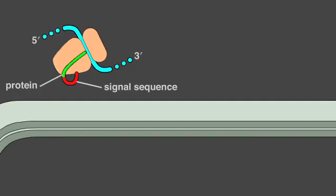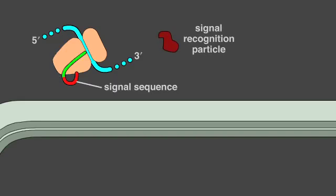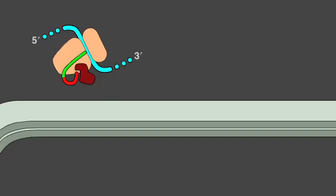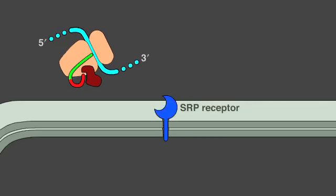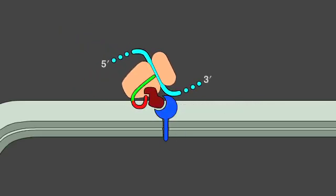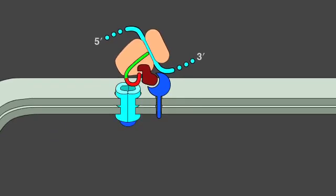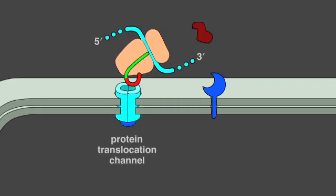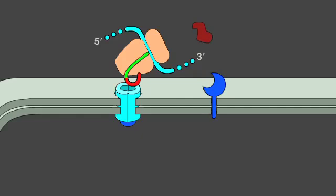The signal sequence is guided to the ER membrane by a signal recognition particle, or SRP, which binds the ER signal sequence in the new protein as it emerges from the ribosome. Protein synthesis then slows down until the SRP-ribosome complex binds to an SRP receptor in the ER membrane. The SRP is then released, passing the ribosome to a protein translocation channel in the ER membrane. Thus, the SRP and SRP receptor function as molecular matchmakers, connecting ribosomes synthesizing proteins containing ER signal sequences to available ER translocation channels.